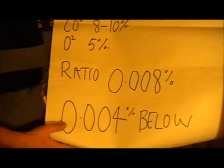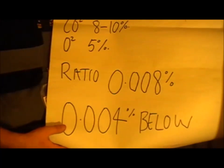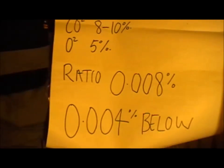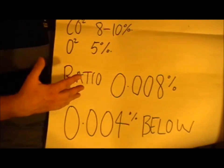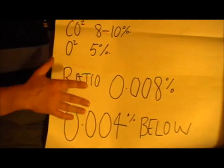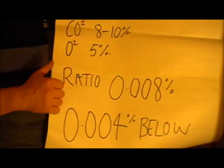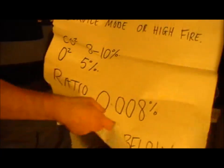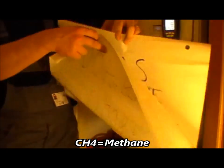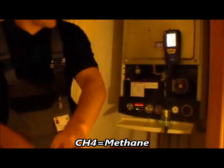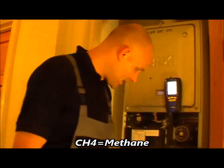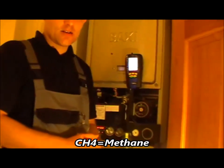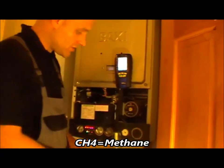If the readings are in between those figures, the appliance needs to be stripped down, serviced and cleaned. On a condensing boiler you have to buy a service kit for that. So here's my flue analyzer — flue analyzers now can do a variety of jobs.